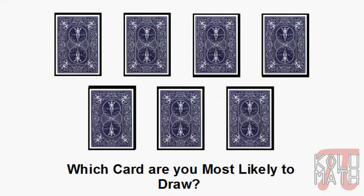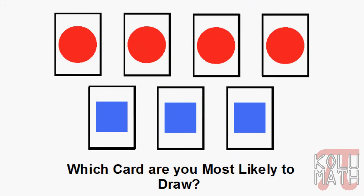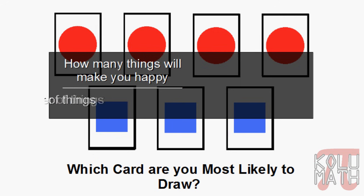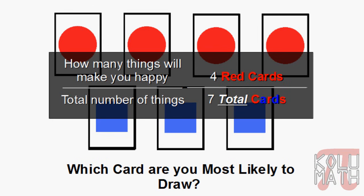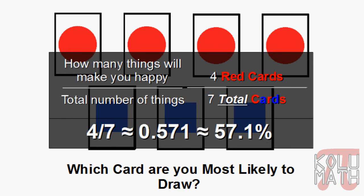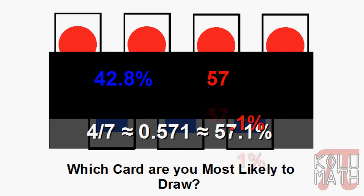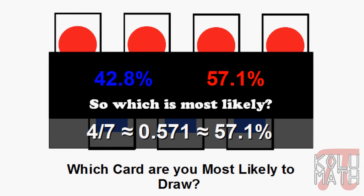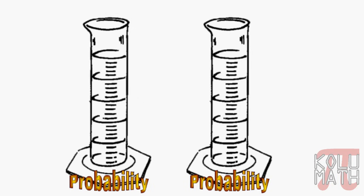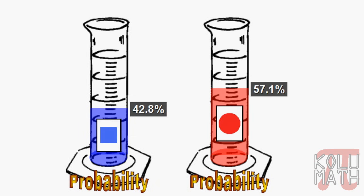Which card are you more likely to draw? We already know about the blues, so let's check out the reds. The probability of drawing a red: four red cards are the things that will make us happy, and we've got a total of seven cards — red and blue put together. We get 57.1%. Comparing the two percentages, blue on the left and red on the right, whoever has the largest numerical value is the most likely. You can see the probability meter for red is a little bit larger than for blue.